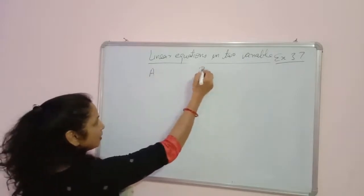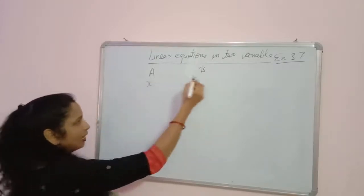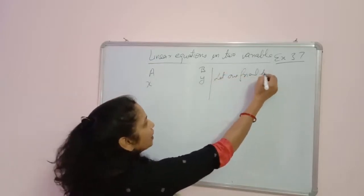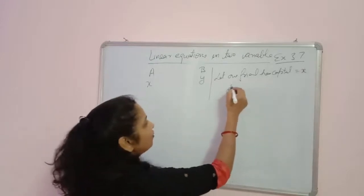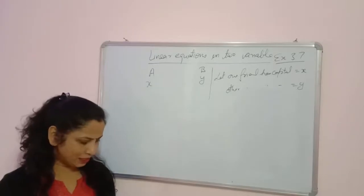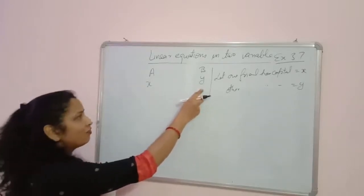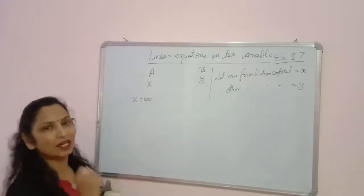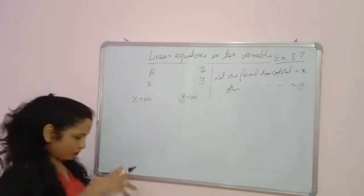Let one friend have capital X and the other friend have capital Y. Friend A says to B: give me 100. If B gives A 100, then A's capital becomes X plus 100 and B's capital becomes Y minus 100. According to the question, A's amount is now twice B's amount, so we set X plus 100 equal to 2 times (Y minus 100).